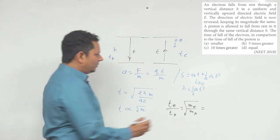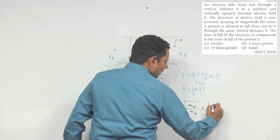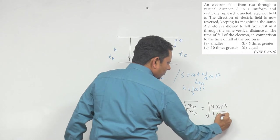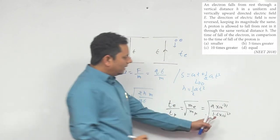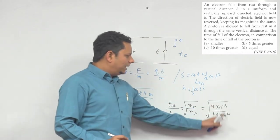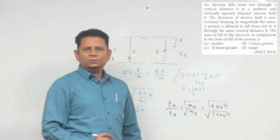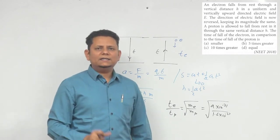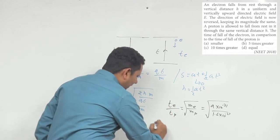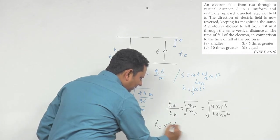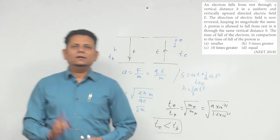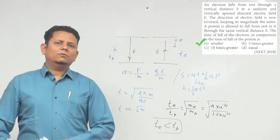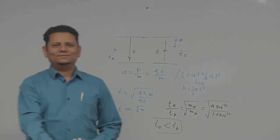Mass of electron ≈ 9×10⁻³¹ kg और mass of proton ≈ 1.6×10⁻²⁷ kg। इनका ratio ≈ 10⁻⁴ बनता है, और जब square root लेंगे तो ratio ≈ 10⁻² आएगा। इसका मतलब time of electron will be less than time of proton — fall का time कम होएगा। So, option (a) smaller is the right answer।